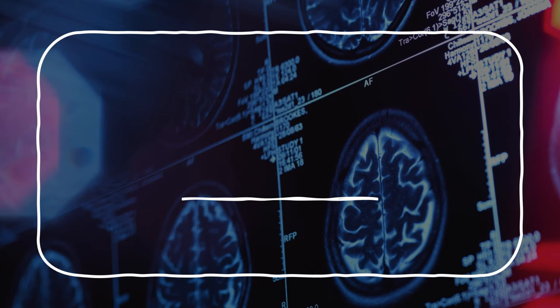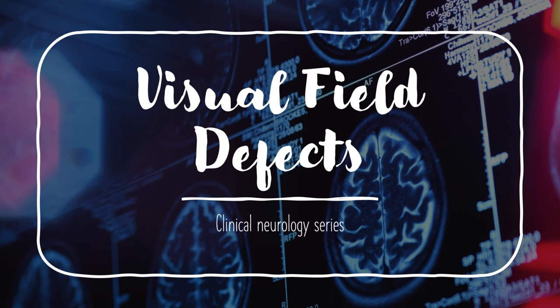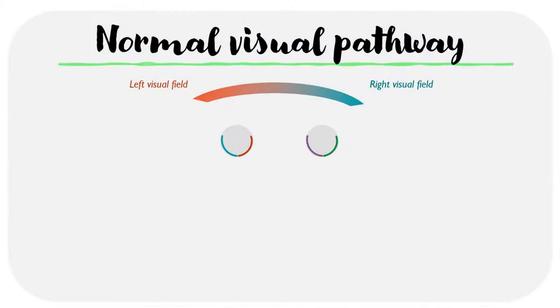Today we're going to be taking a look at visual field defects as part of the clinical neurology series. The best place to start with this topic is by first understanding how the normal visual pathway functions with a simplified diagram.